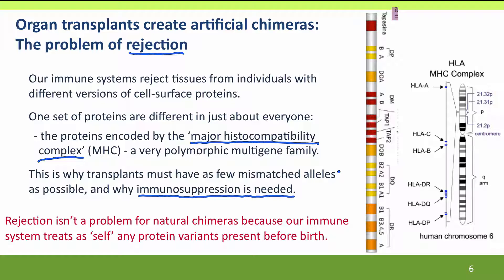Rejection isn't an issue with natural chimeras because the immune system learns during fetal development what is 'self' — any proteins present during that developmental period are treated as self. It's only proteins that haven't been encountered before that will subsequently be treated as foreign. So chimeras are okay; their tissues aren't rejecting each other.